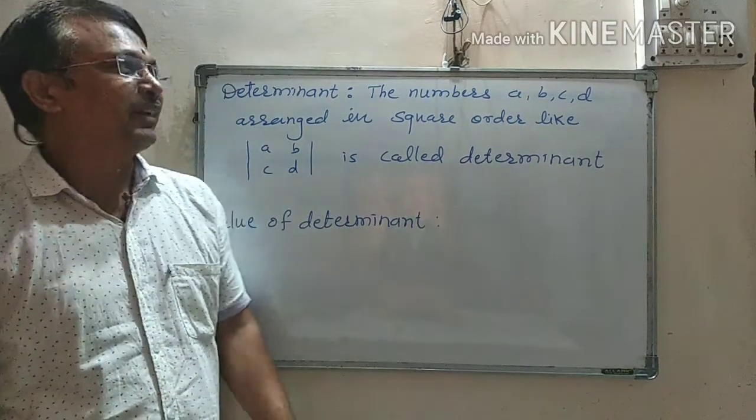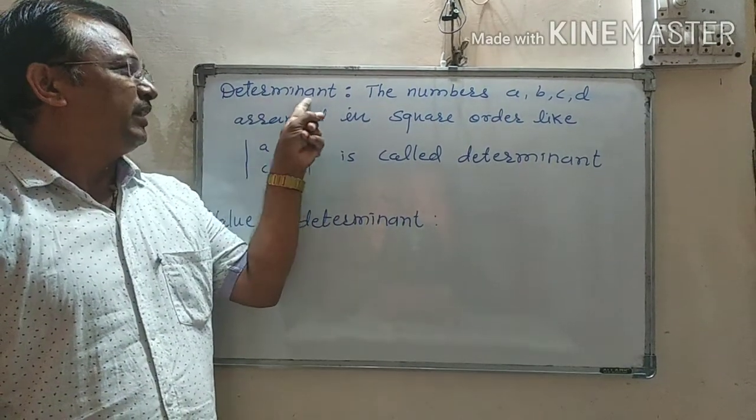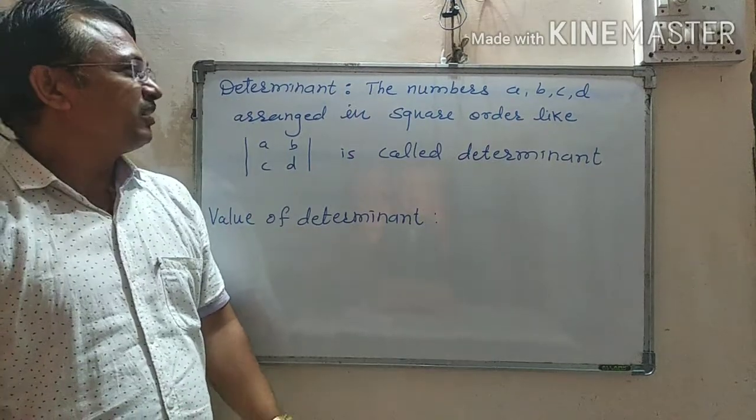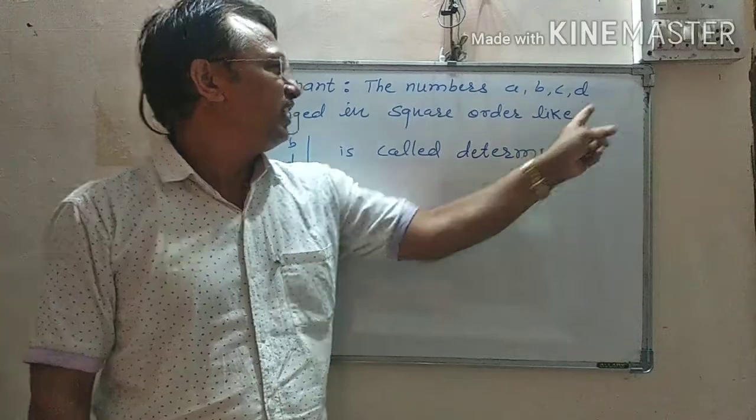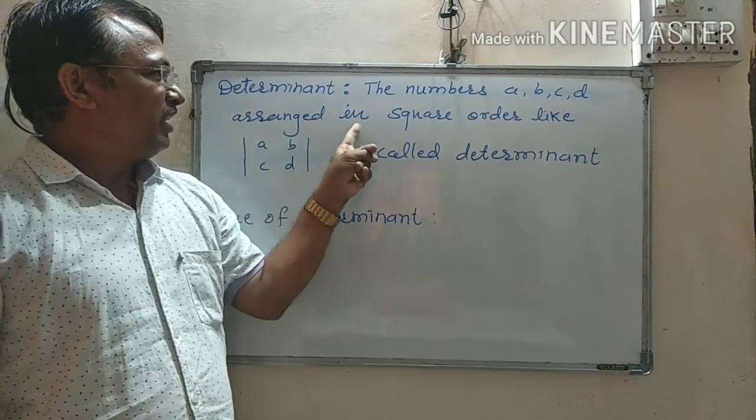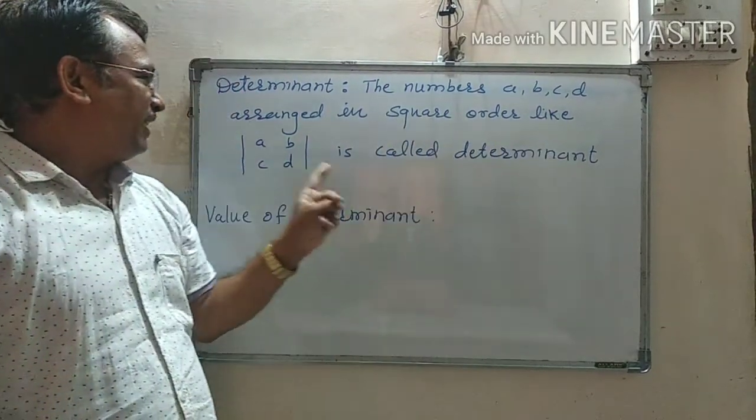Determinant. See the definition of determinant: the numbers, these four numbers A, B, C, D arranged in square order, like a square, is called determinant.